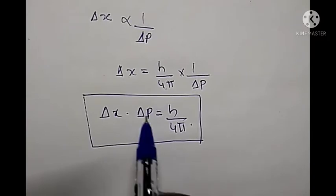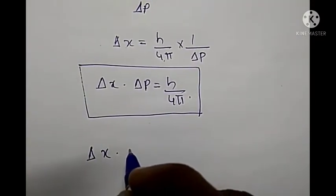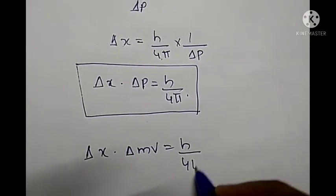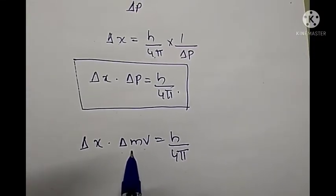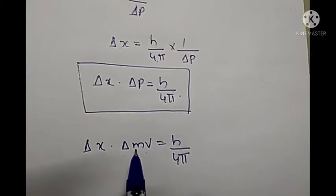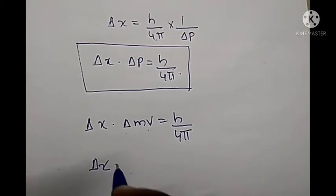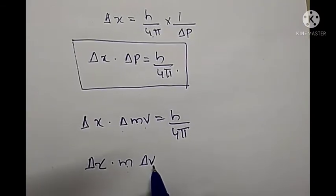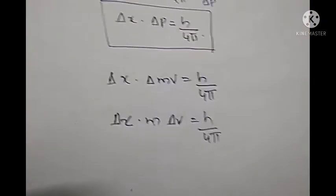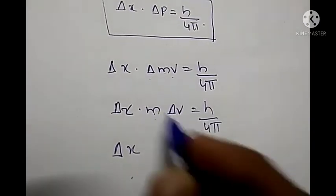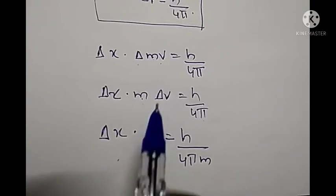Instead of Δp, since momentum p = mv, we can write Δx · Δ(mv) = h/4π. For a particular electron, mass remains constant, so we can take mass outside: Δx · m · Δv = h/4π. Since m is constant, we can take it to the other side: Δx · Δv = h/(4πm). From this equation, we can understand that the product of uncertainty in position and velocity is inversely proportional to the mass of the particle.